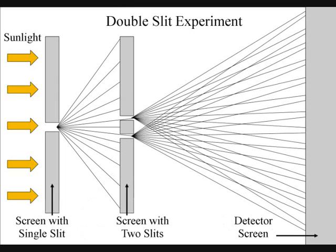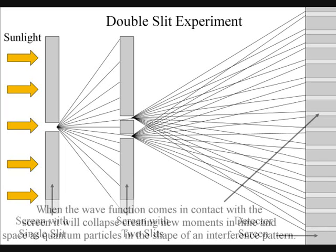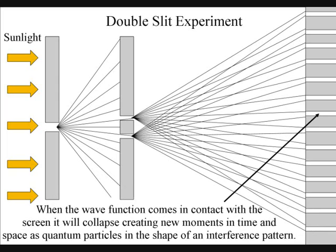The part of the wave that does not come in contact with the screen will expand in all possible routes, going through both slits. When this wave-particle function comes in contact with the screen, it will collapse, creating moments of time and quantum particles in the shape of an interference pattern.